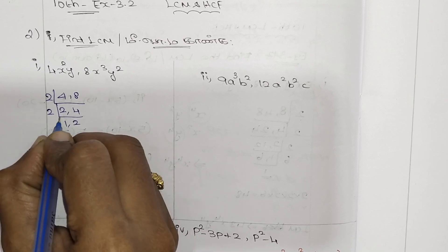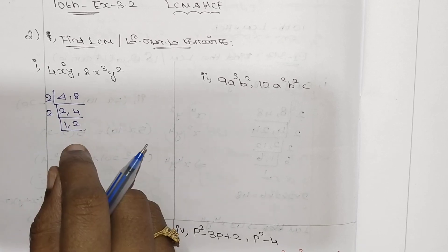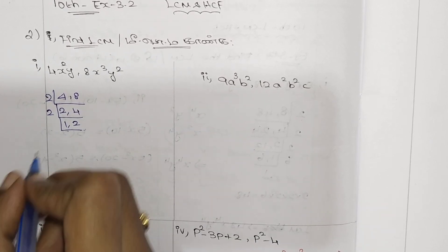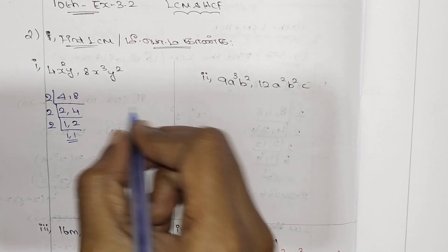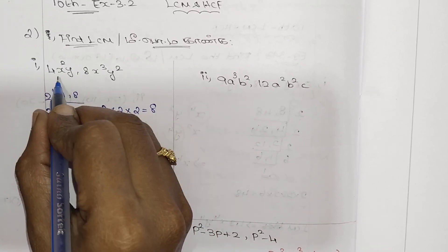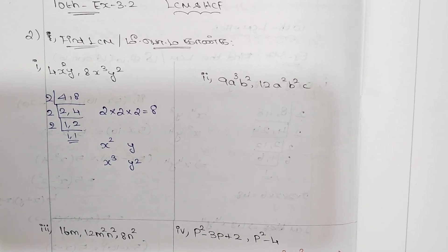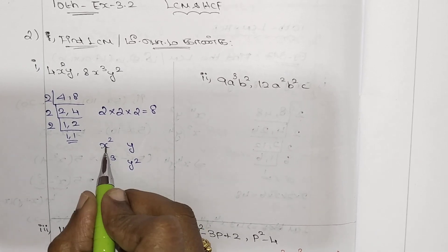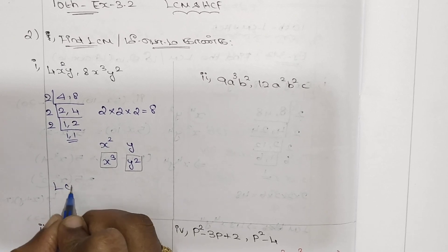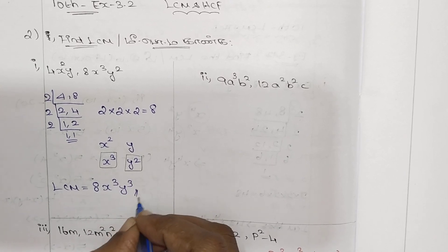Now let's do the 2 tables: 1x², 2x², 4x². If we equate 1 and 2, if we find the GCF, then we can do it. 2 tables: 2 to 2 to 4 to 4 to 8. The numbers give us 8. What is x²y and x³y²? The LCM takes the highest power. We can write: the number is 8, and the variables are x³y².